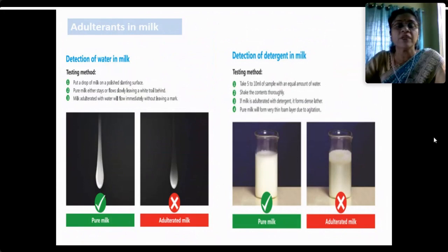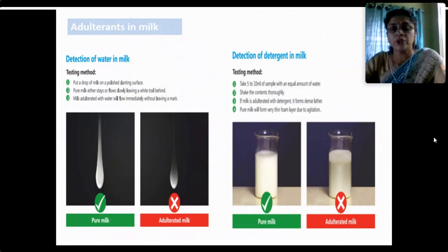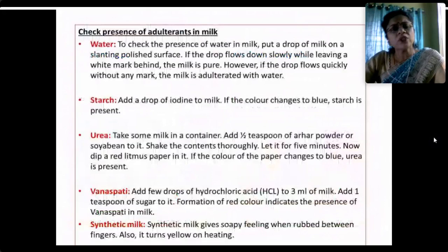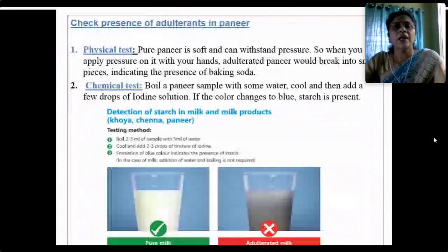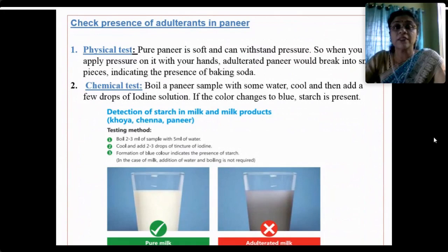To check for detergent in milk: take 5–10 ml of milk with equal amount of water, shake thoroughly — adulterated milk will form dense lather, while pure milk forms only a thin foam due to agitation. Similarly, tests can be done for starch, urea, vanaspati and synthetic milk — synthetic milk gives a soapy feeling when rubbed between fingers and turns yellow on heating. For paneer: pure paneer is soft and withstands pressure, whereas adulterated paneer breaks into small pieces indicating the presence of baking soda. A chemical test involves boiling a paneer sample with water and adding a few drops of iodine solution — a blue color change confirms starch is present.